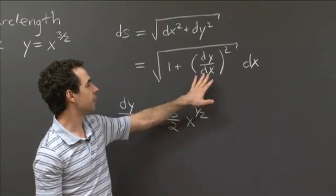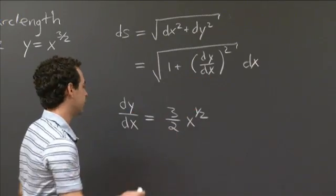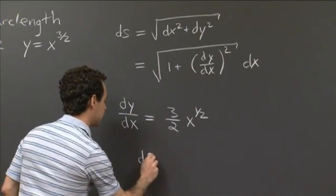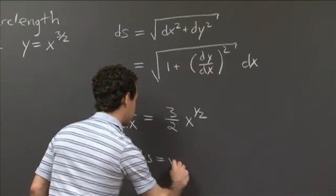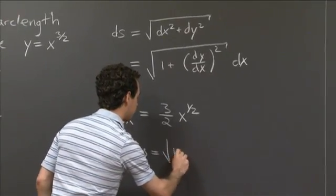So ds then, well, we just have to plug it in there. So that means ds is equal to the square root of 1 plus,